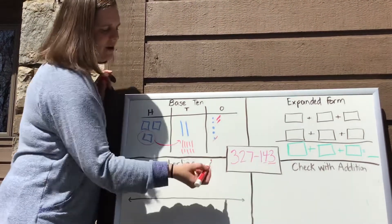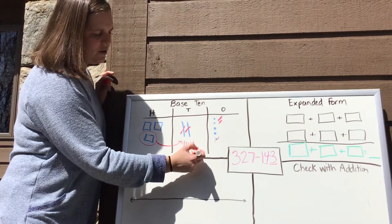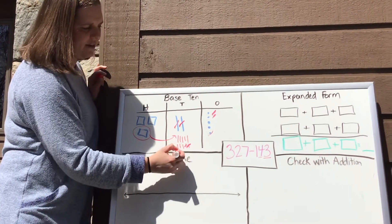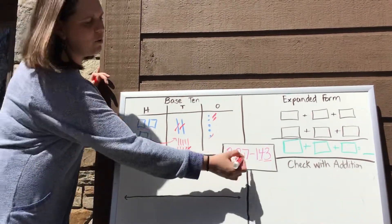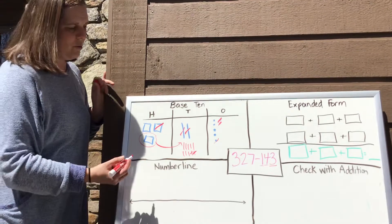Now I can take away my four tens. So I'm going to say one, two, three, four, and that leaves me with eight tens. And then I'm going to take away one 100, and so that leaves me with one 100.